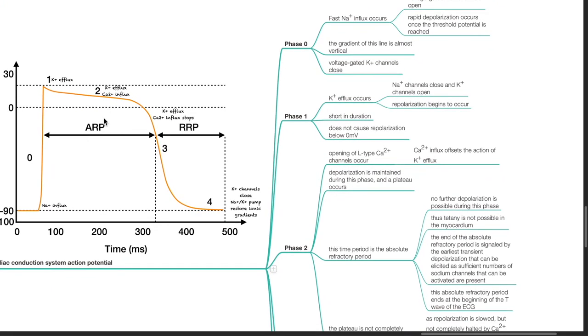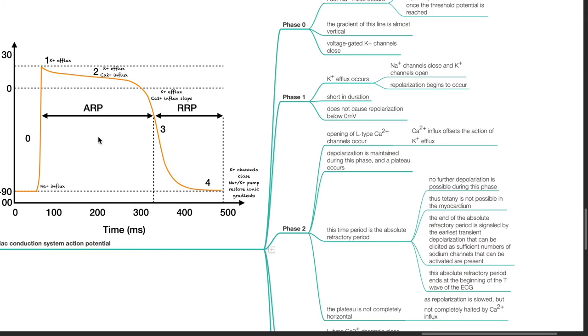During phase 2, there is opening of L-type calcium channels. Calcium influx offsets the action of potassium efflux. Depolarization is maintained during this phase and a plateau occurs. This time period is the absolute refractory period. During this period, no further depolarization is possible, thus tetany is not possible in the myocardium. The end of the absolute refractory period is signaled by the earliest transient depolarization that can be elicited as sufficient numbers of sodium channels that can be activated are present. This absolute refractory period ends at the beginning of the T wave of the ECG. The plateau is not completely horizontal as repolarization is slowed but not completely halted by calcium influx.